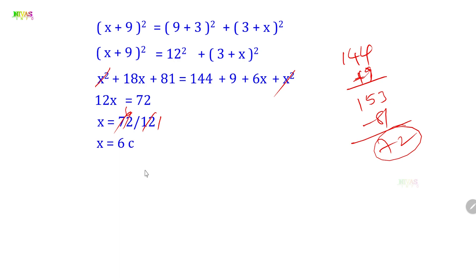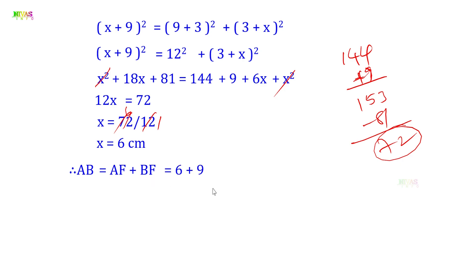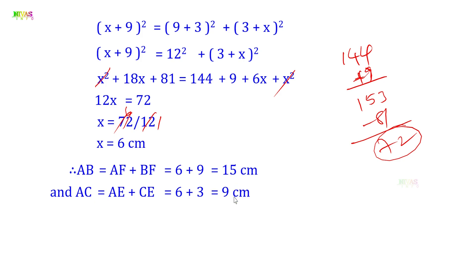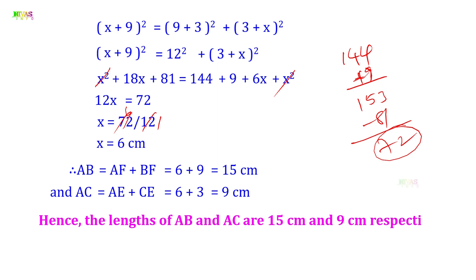Now we can find AB and AC. AB equals AF plus BF. AF is X which equals 6, and BF equals 9, so AB equals 6 plus 9 equals 15 centimeters. AC equals AE plus CE. AE equals 6 and CE equals 3, so AC equals 6 plus 3 equals 9 centimeters. Hence, the length of AB and AC are 15 centimeters and 9 centimeters respectively.